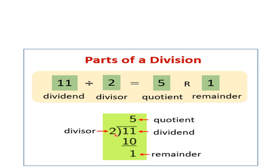Since 2×5=10, we write 10 here and subtract: 11 minus 10 equals 1, and 1 is less than 2. So 1 is our remainder and 5 is the quotient. To summarize: 11 is the dividend, 2 is the divisor, 5 is the quotient, and 1 is the remainder.